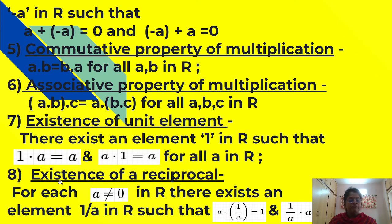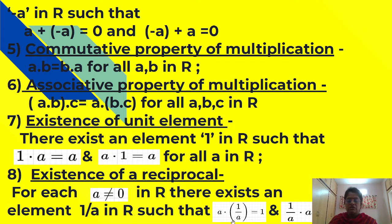Eighth property: existence of reciprocal. For each a not equal to 0 in R, there exists an element 1 upon a in R such that a into (1 upon a) is equal to 1, and (1 upon a) into a is also equal to 1. If a is 2, then 1 upon a will be 1 half, and 2 into half will be equal to 1. Similarly, 1 half into 2 is also equal to 1.